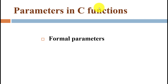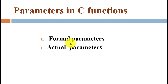Now parameters are again divided into types. The first types are formal parameter and actual parameter. Let's understand one by one what is a formal parameter and what is an actual parameter.